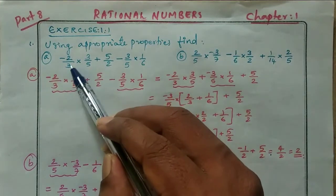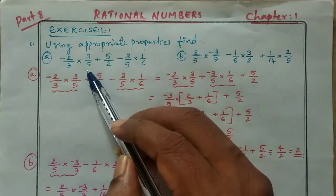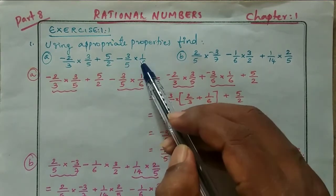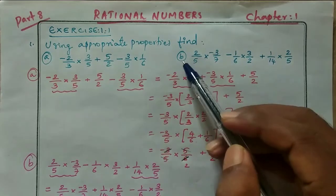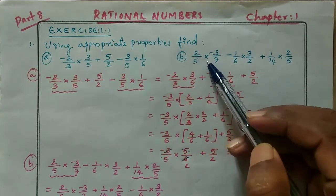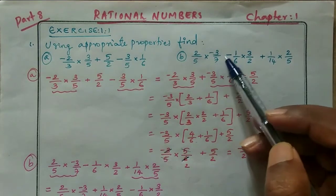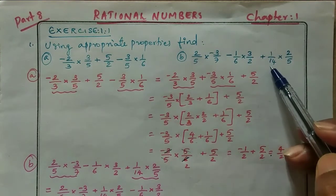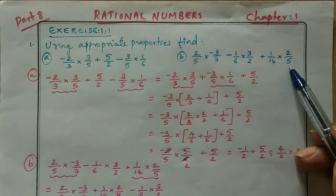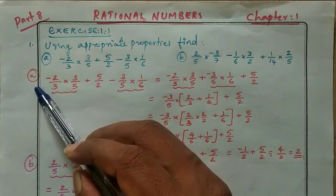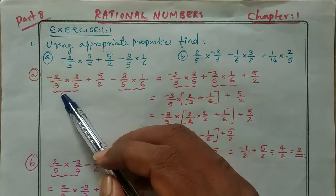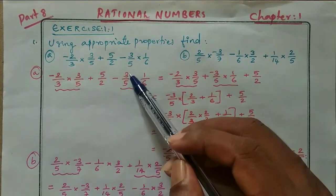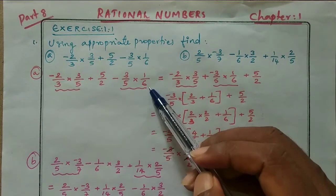Question number 1: using appropriate properties, find (a) minus 2 by 3 into 3 by 5 plus 5 by 2 minus 3 by 5 into 1 by 6. Sub question (b): 2 by 5 into minus 3 by 7 minus 1 by 6 into 3 by 2 plus 1 by 14 into 2 by 5.